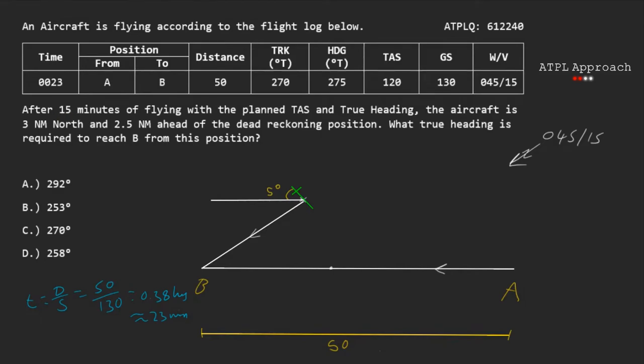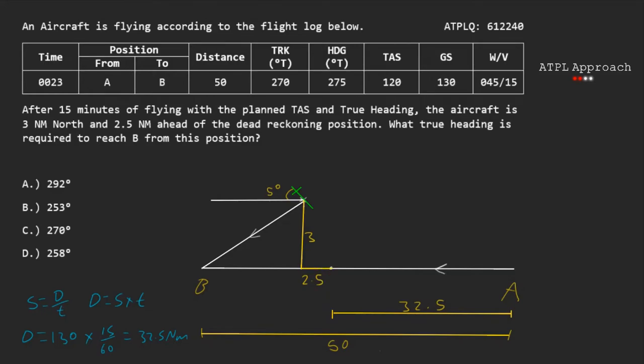So 15 minutes at a ground speed of 130 knots. We arrange the speed distance time formula to give us the expected distance to be 32 and a half nautical miles. As we know the total expected distance, and only have one expected distance left to find, we can do the total, subtract 32 and a half, subtract another 2.5, to give us 15 nautical miles, which is what we expected to have left.